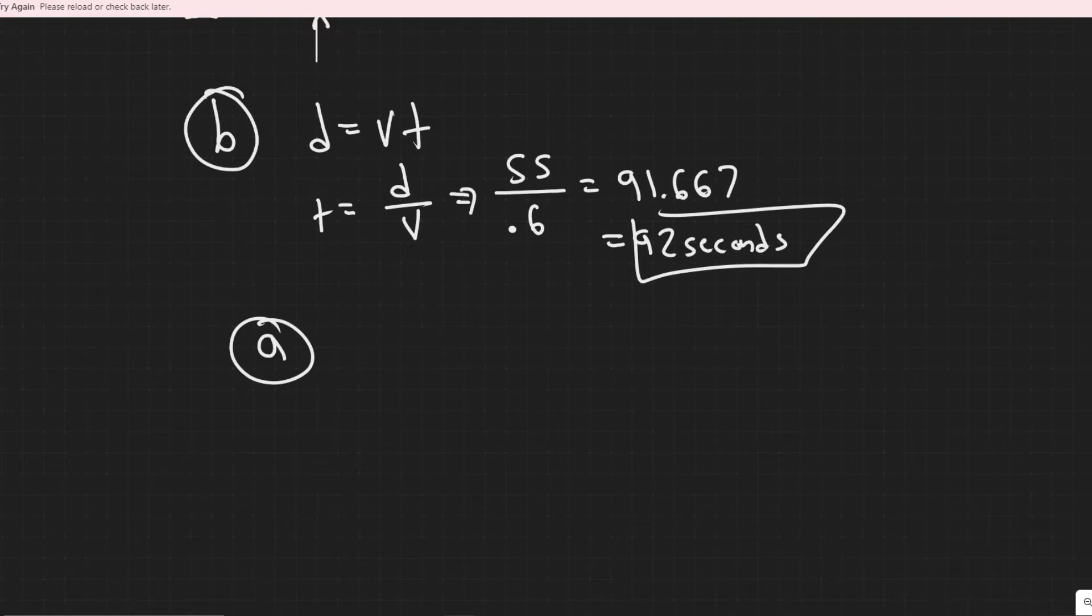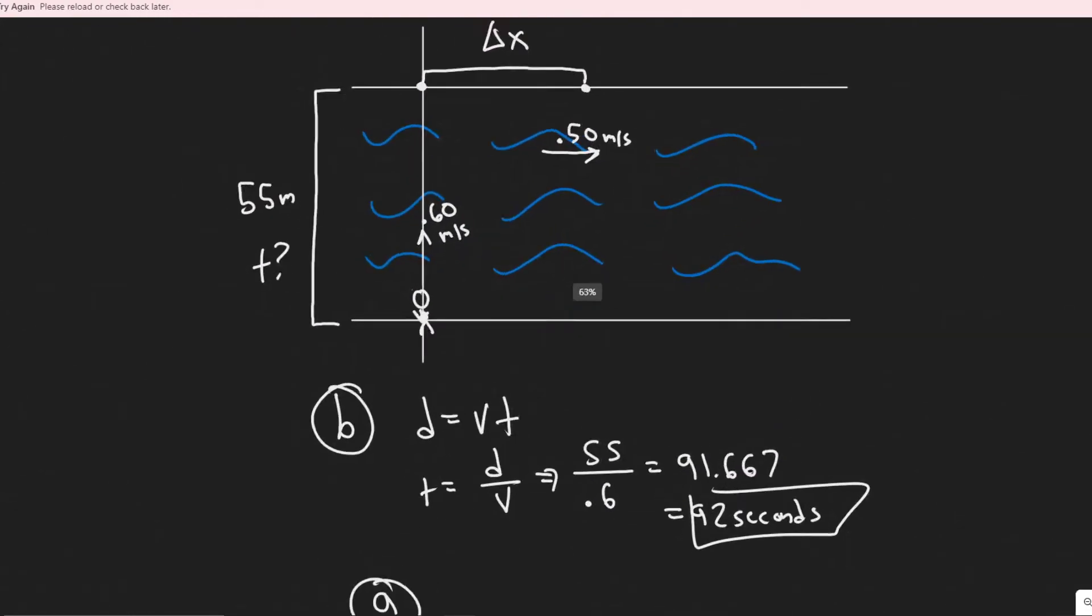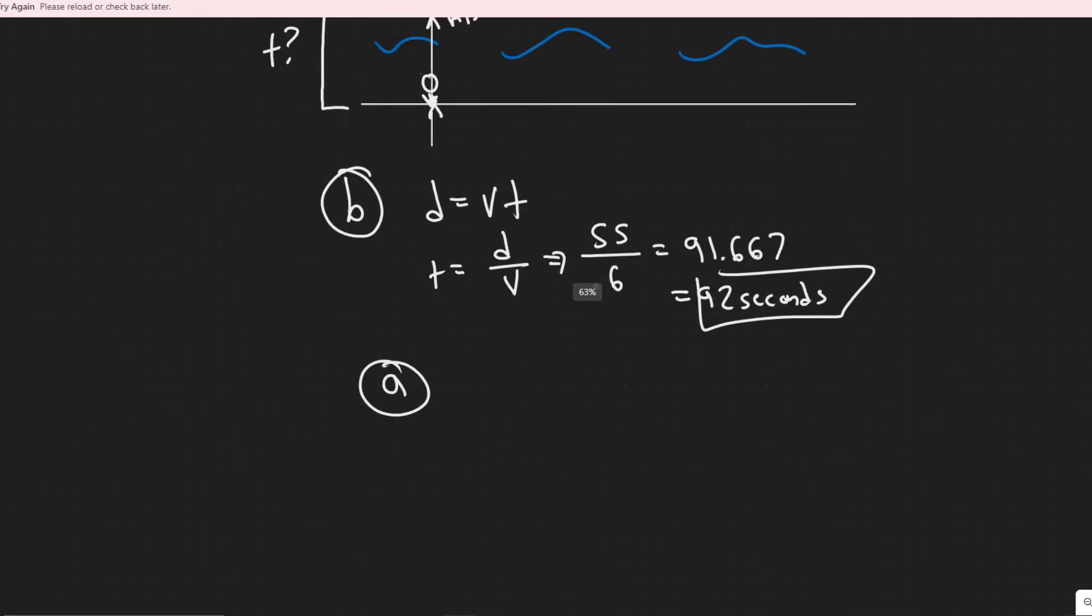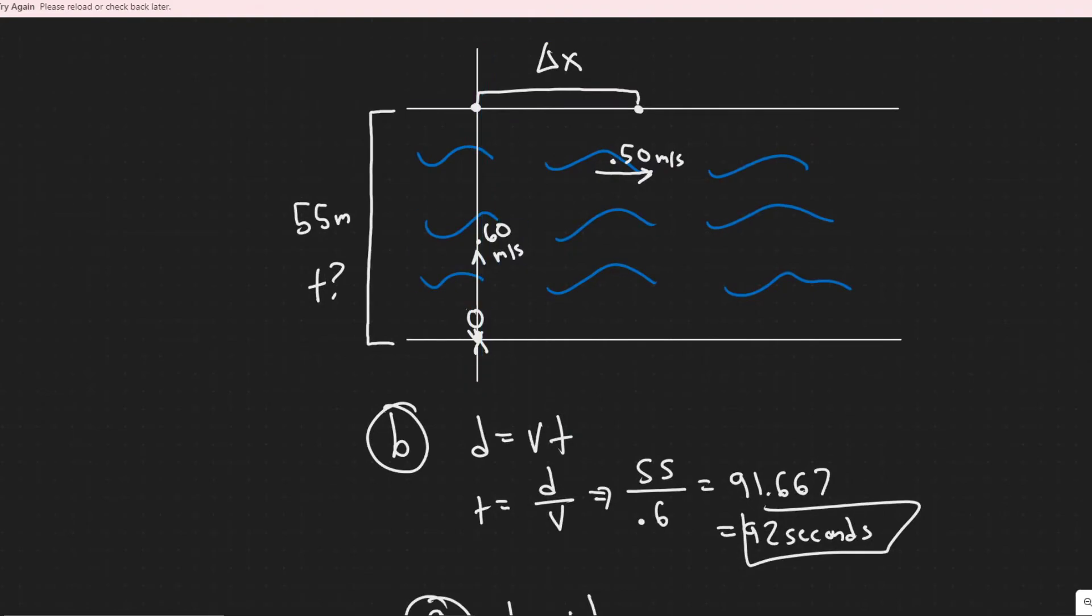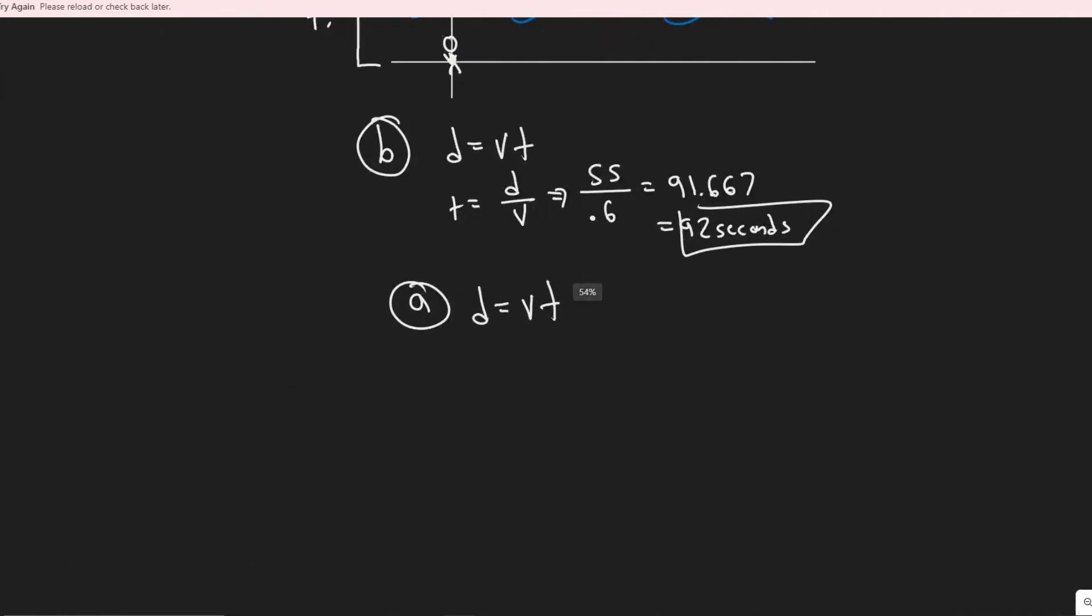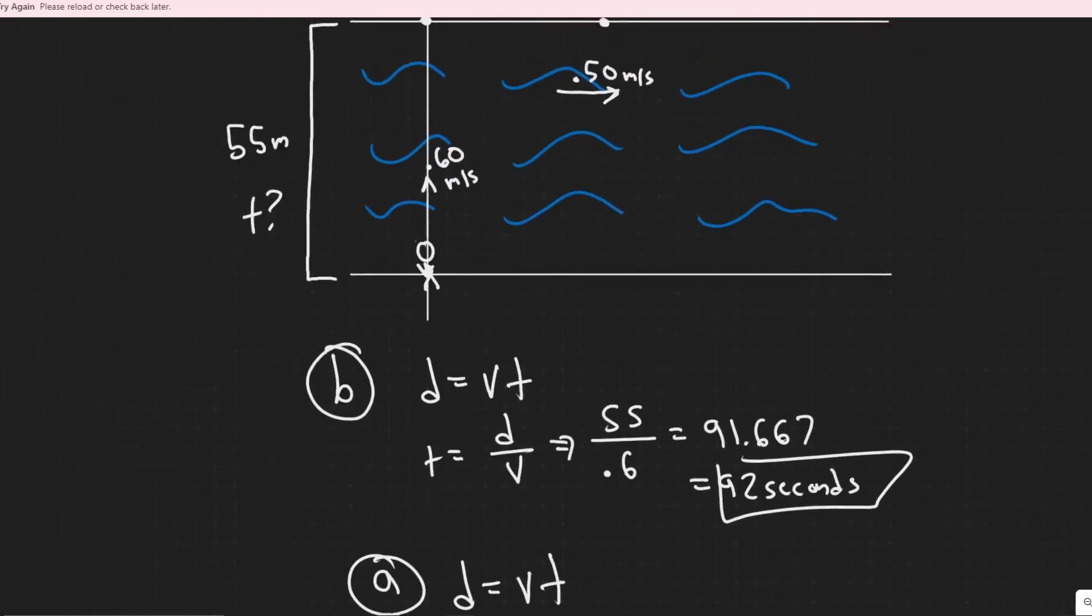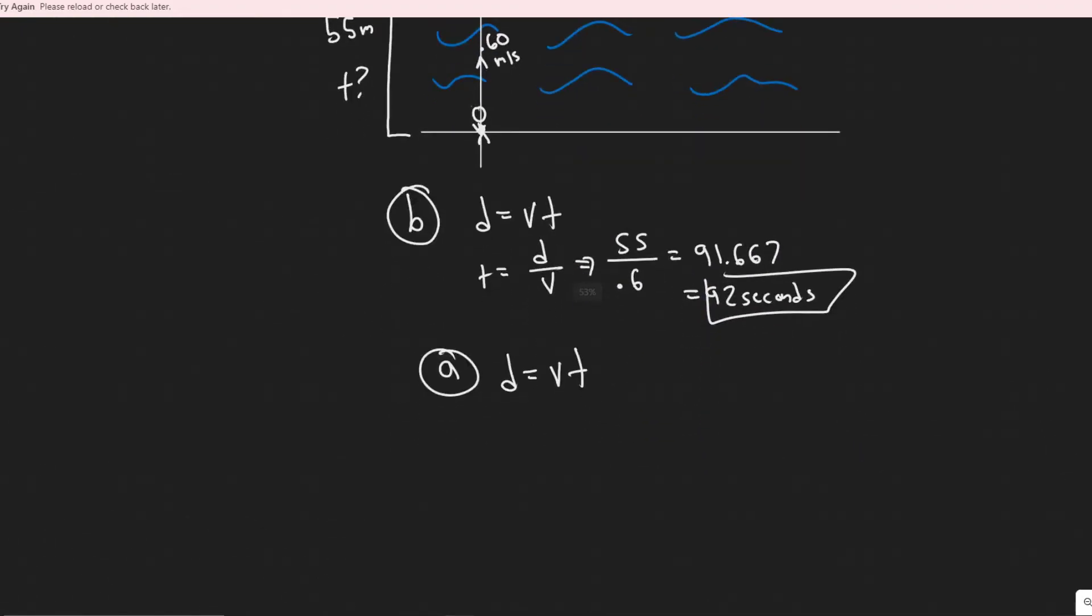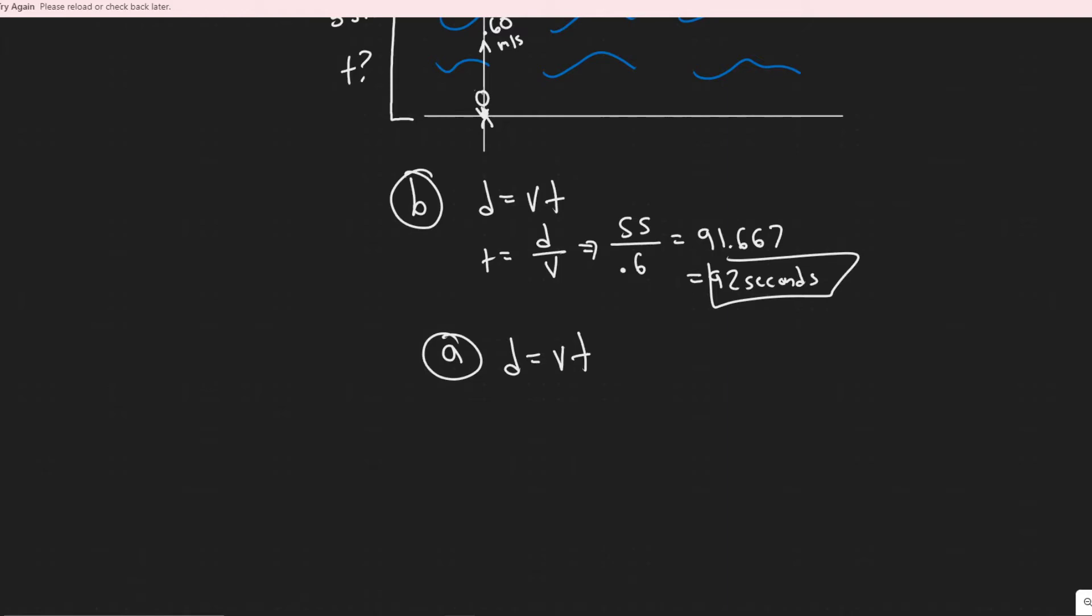And now that we know that it makes solving part a a lot easier. So part a is how far from her starting point will she land, so basically what this delta x is. And so we're going to again use the same exact formula distance equals velocity times time, but instead of looking at it along this way we're going to look at it along this way.